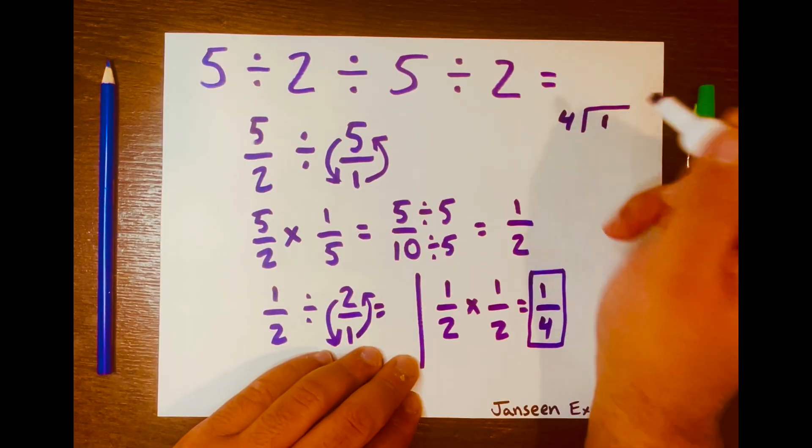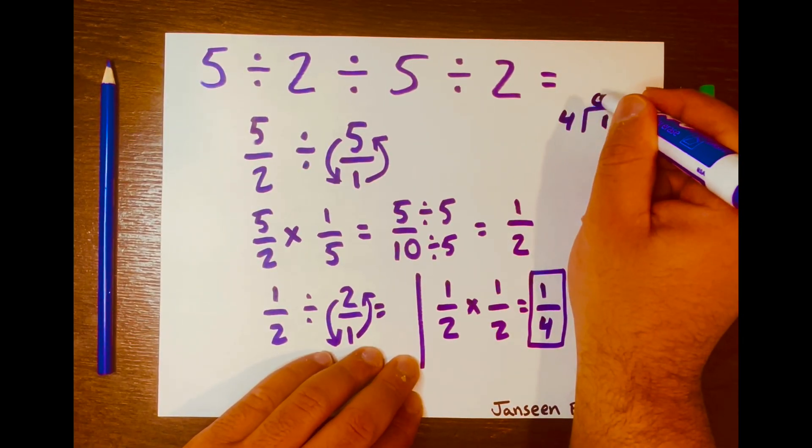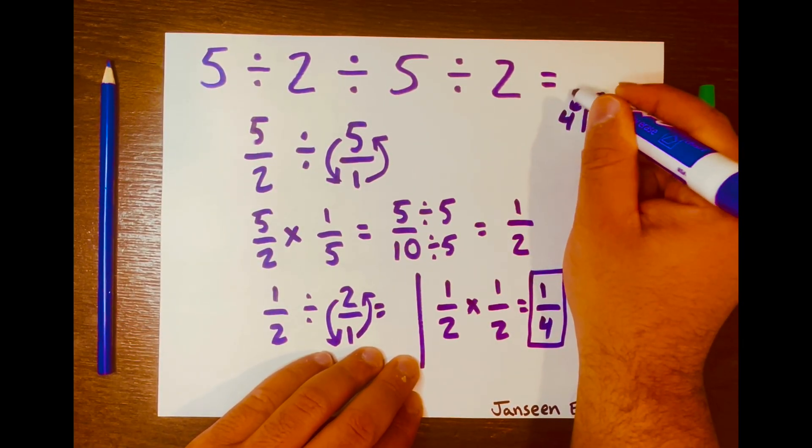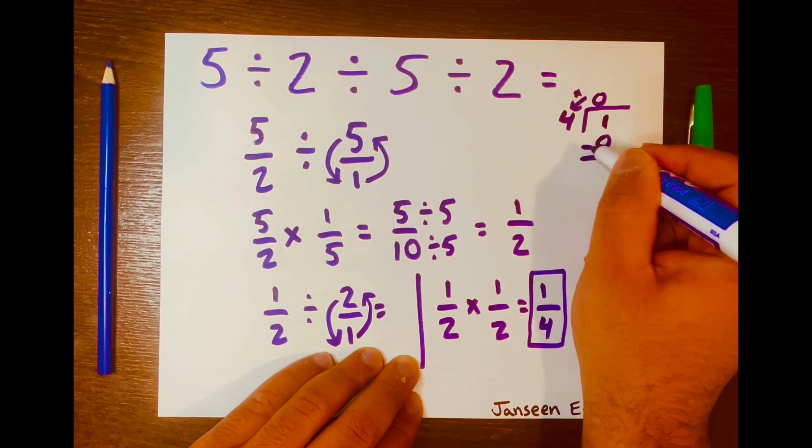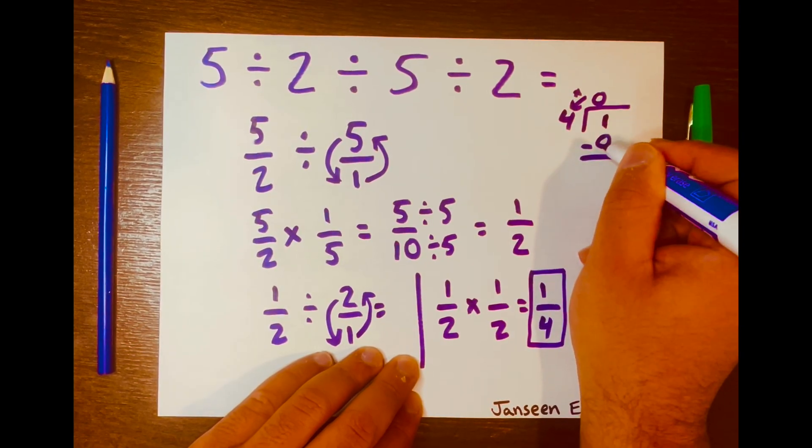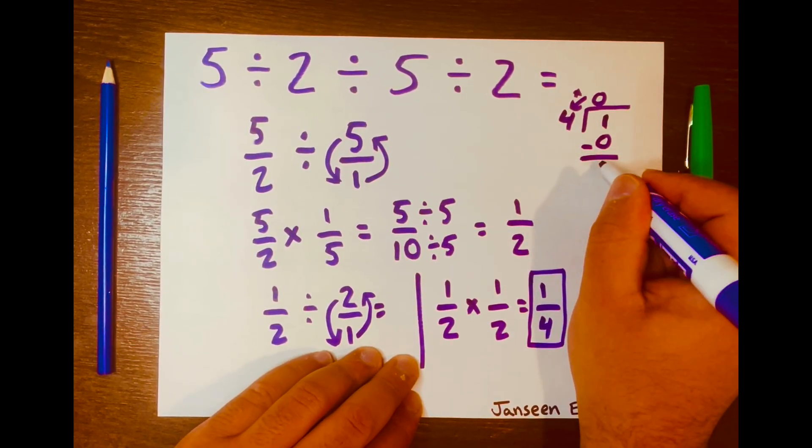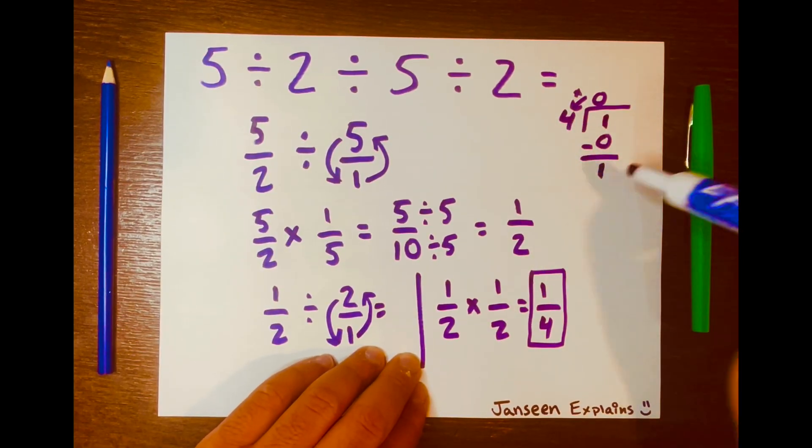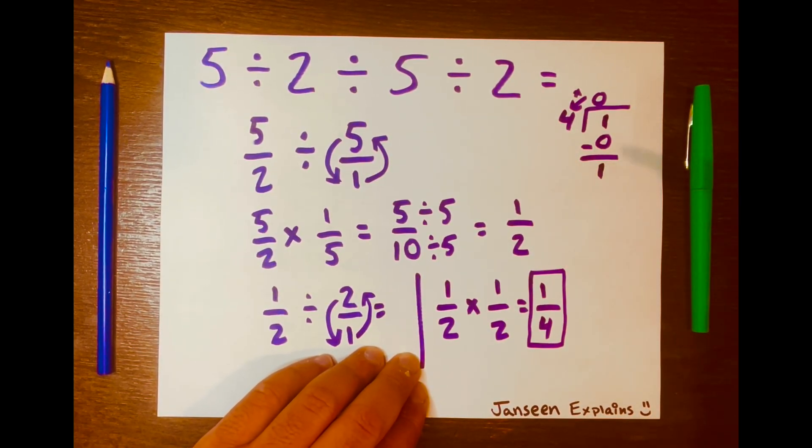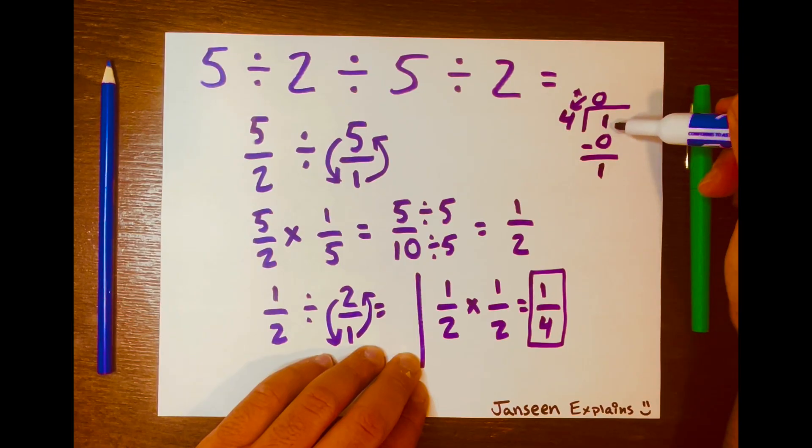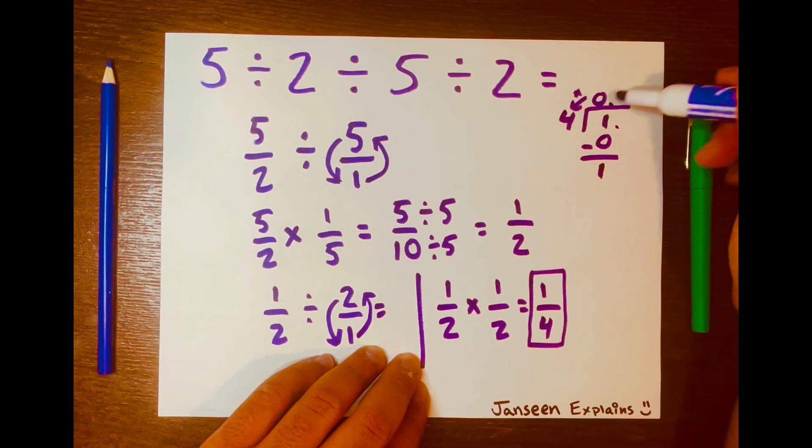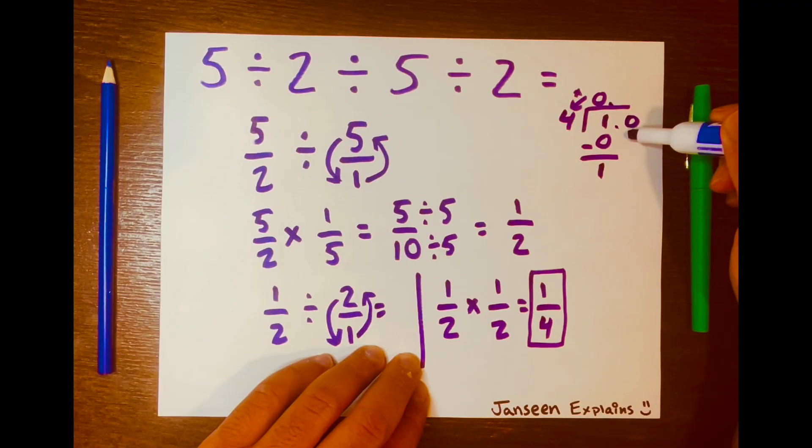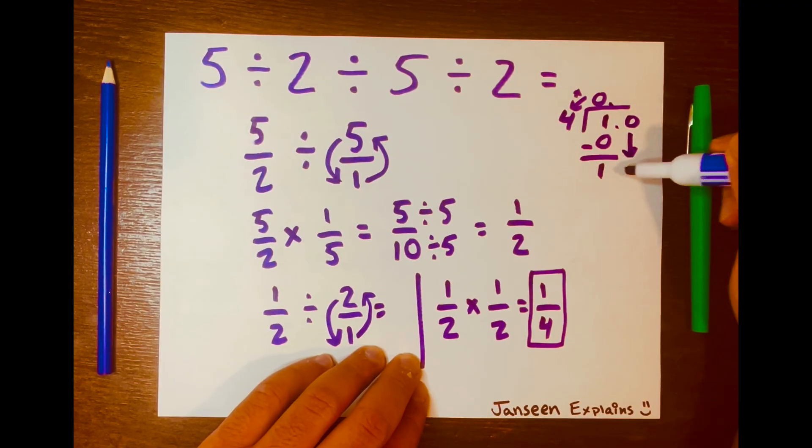How many times can 4 fit into 1? You cannot, so it'll be 0. Then you multiply: 0 times 4 is 0. And you subtract 1 minus 0, which is 1. Now can you fit 4 into 1? You cannot, so you need to borrow 0. We'll add a decimal after the 0, and then we'll give the 0 to the 1, and it becomes 10.